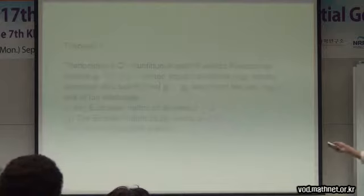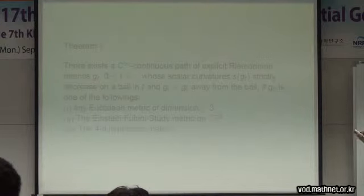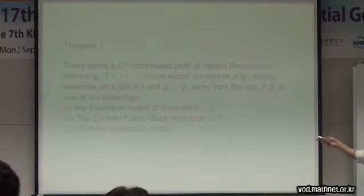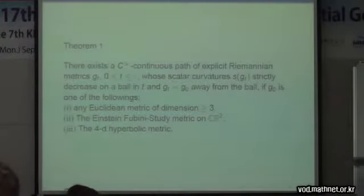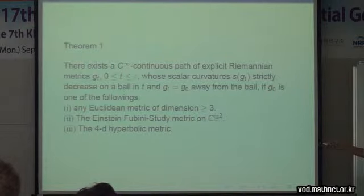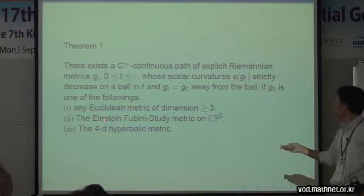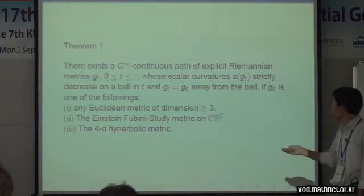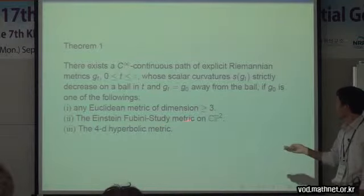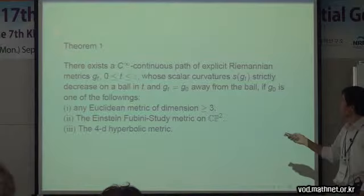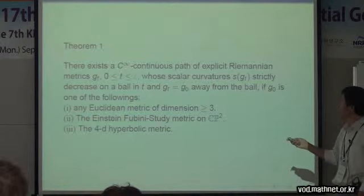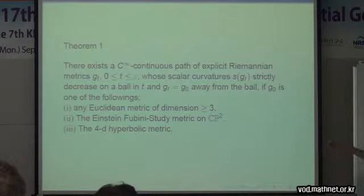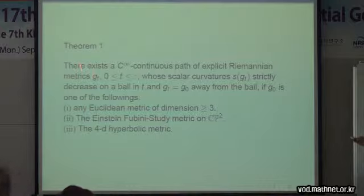Let me introduce what I have done. Simply speaking, scalar curvature melting exists if the metric is one of the following: any Euclidean metric, any Einstein–Fubini–Study metric, and the 4D hyperbolic metric. These are four-dimensional examples, but I think this holds in any dimension. Actually, for any Einstein metric, scalar curvature melting exists — that's what I have found out.